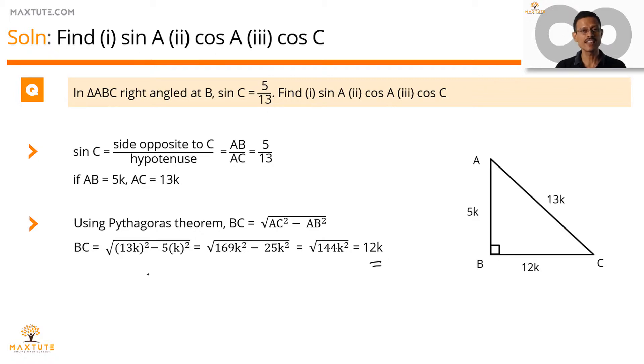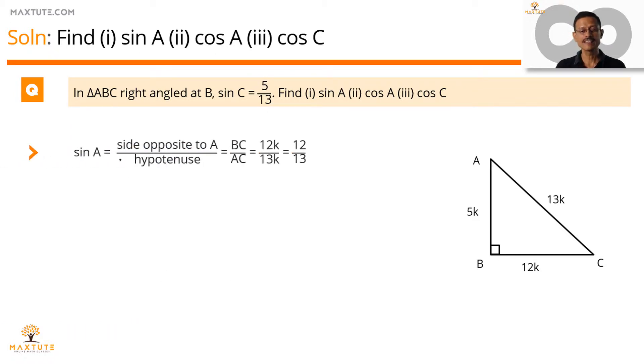Now let's set about finding out these three ratios. Let's start with sin A. Sin A is equal to opposite side by hypotenuse. Opposite to angle A. The side opposite to angle A. Opposite to A. This is adjacent to C. Side AB is opposite to angle C and it is adjacent to angle A.